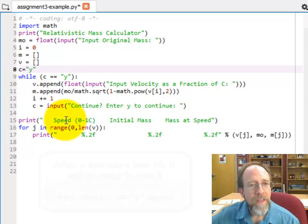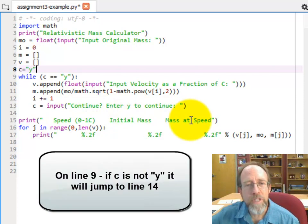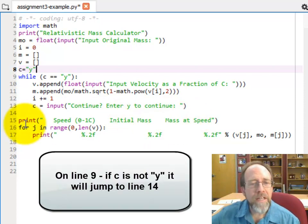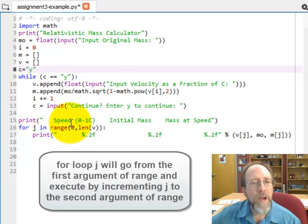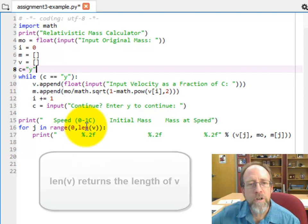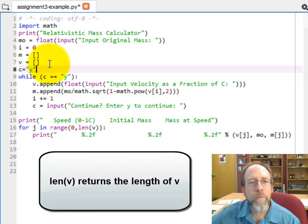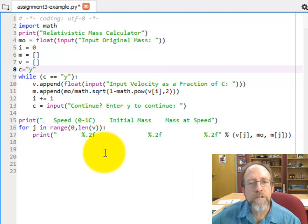By the way, it's going to print now a header, which is going to be speed, initial mass, and mass at the speed. And then it goes in, and now you can go back and remember from your last lecture, lecture 2, the range operator for j in range. And the range would be where you start, 0, and where you end up, which is len of v. Well, len is a function that returns the length of the array v. So this is going to go through this as many times as you've entered values for v.